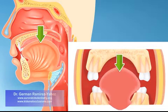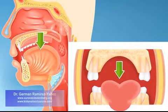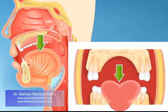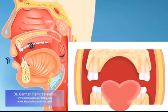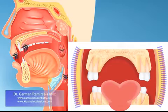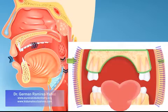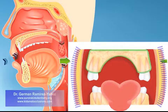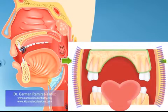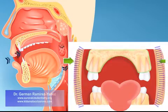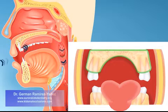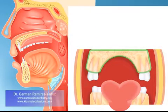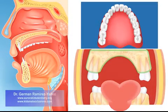Conversely, when you breathe through your mouth, your tongue has to descend and protrude. At the same time, the pressure of your cheeks increases, pushing the upper jaw inwards, so the growth and development of your upper jaw is negatively affected, resulting in a narrow and high palate.